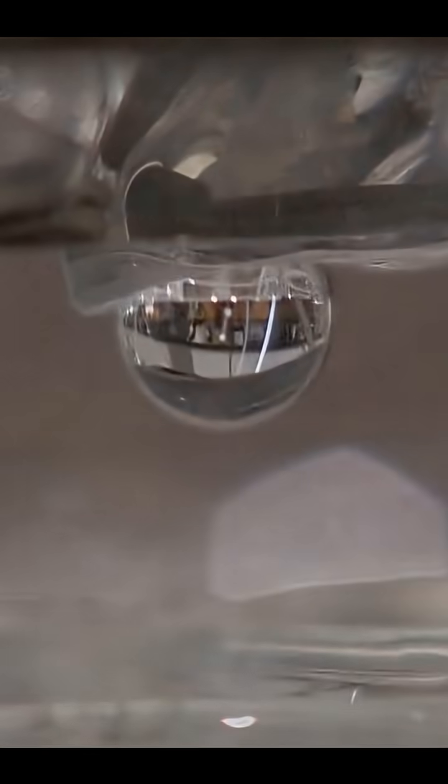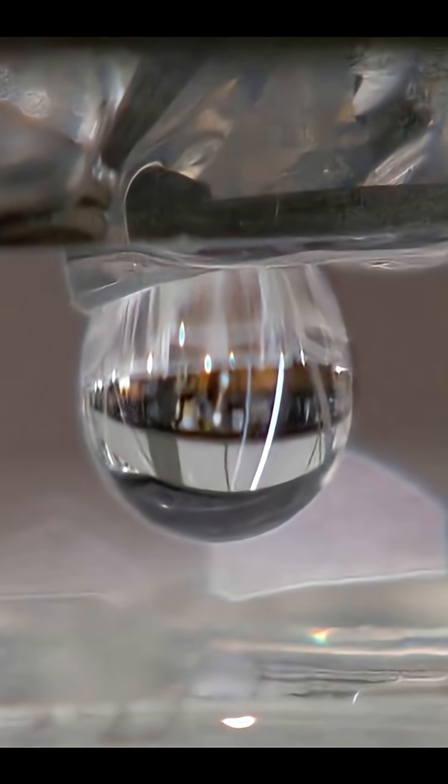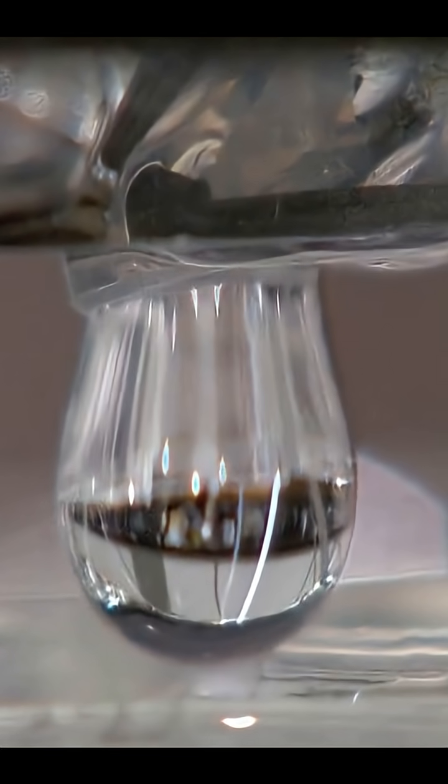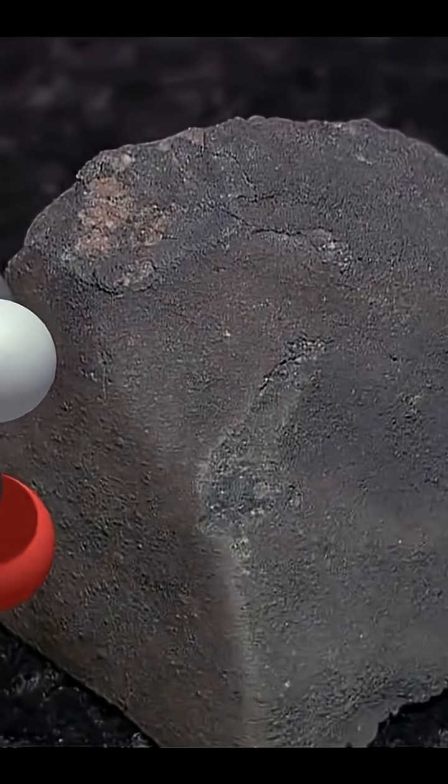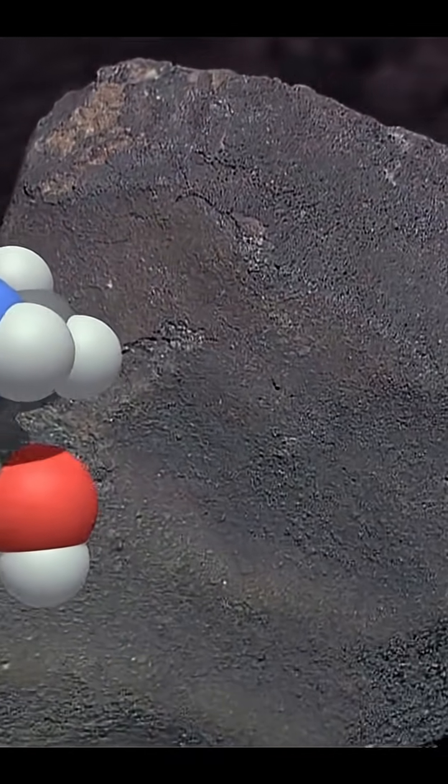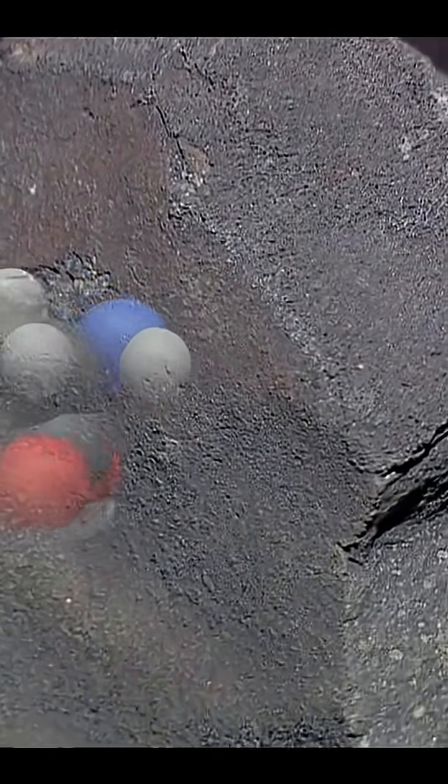What we find in the meteorite is that there are small excesses of one-handed form of amino acids over the other. In other words, there is the beginnings of a selection process represented in this material, which was brought to the Earth from outside the Earth's sources, like cometary or small body or dust infall.